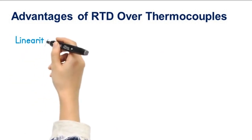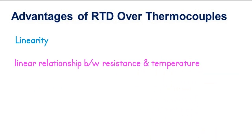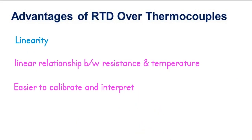Linearity: RTDs have a linear relationship between resistance and temperature, making them easier to calibrate and interpret compared to thermocouples, which have a non-linear output.